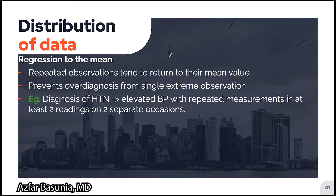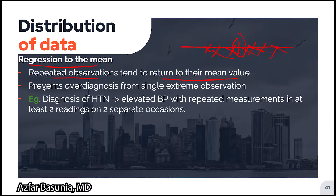In the last slide of the fourth module, let us discuss regression to the mean. Regression to the mean refers to the phenomenon where repeated observations tend to return to their mean value. In the clinical realm, this prevents over-diagnosis from a single extreme observation. A prominent example is the diagnosis of hypertension, where elevated blood pressure must be confirmed with at least two readings on two separate occasions — highlighting how much over-diagnosis could occur with only one reading.